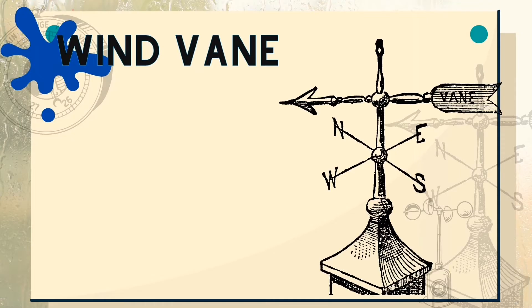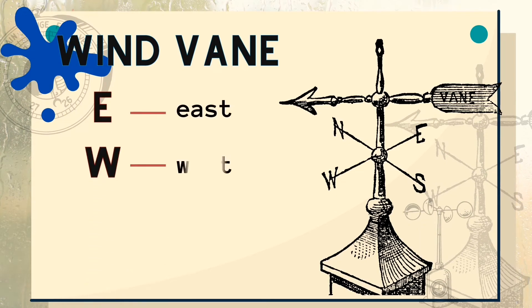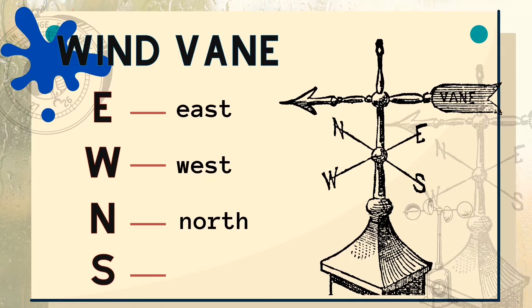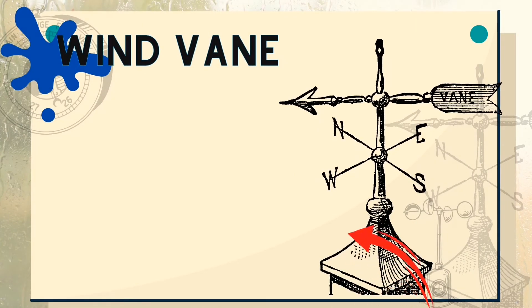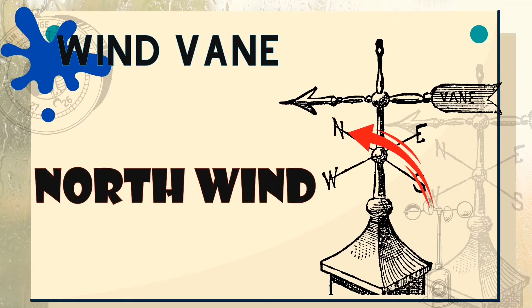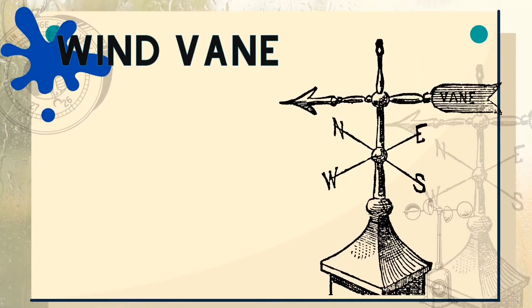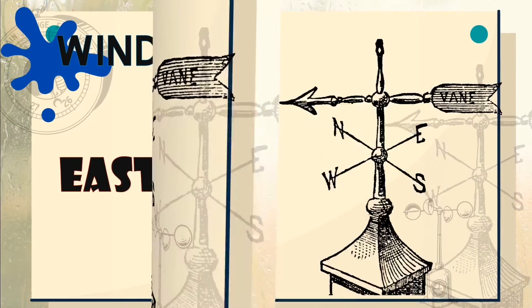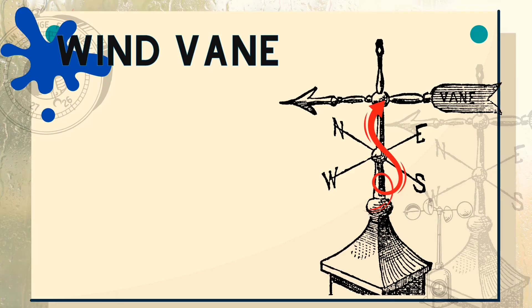The four letters on a wind vane — E, W, N, S — represent the four directions: E for east, W for west, N for north, and S for south. If the arrowhead of the wind vane faces the north direction, it means the wind is blowing north, and it is called north wind. If it blows from the east, it is called east wind. If the arrowhead points between north and east, it means the wind is blowing northeast.